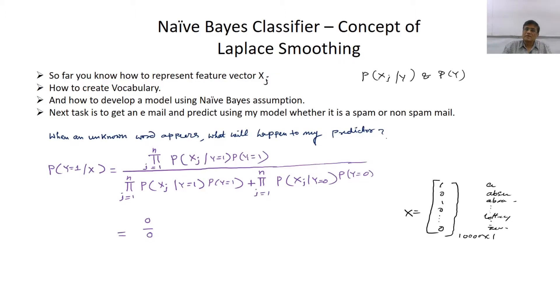Earlier we discussed that there are two variants of Naive Bayes classifier depending on the way you represent the feature. One is if you represent features like the way we have discussed, this model is known as multivariate Bernoulli event model.